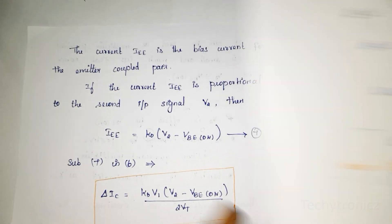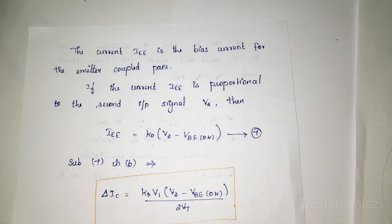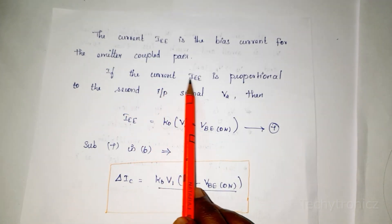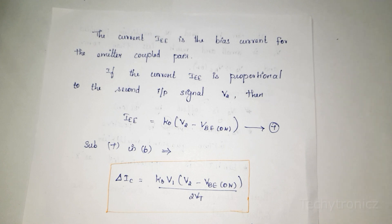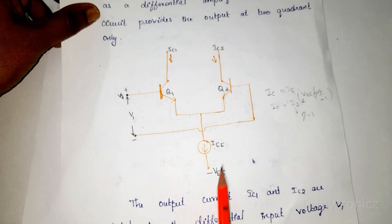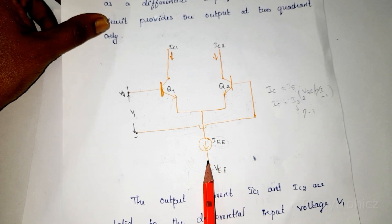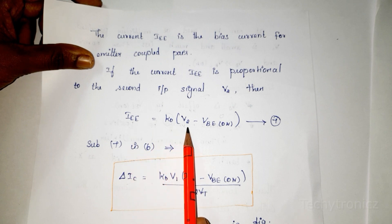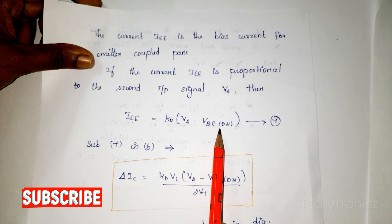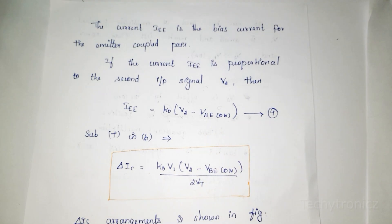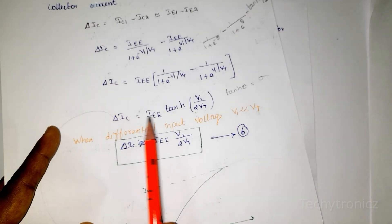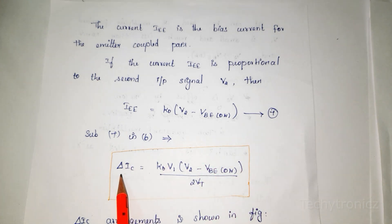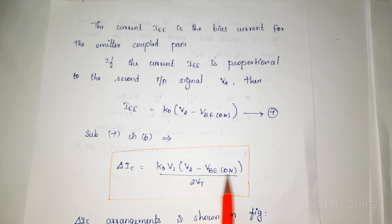The current IEE is the bias current for the emitter coupled pair. If IEE is made proportional to the second input voltage V2, then IEE = K0 × (V2 − VBE(ON)). Substituting this into the ΔIC equation gives ΔIC = K0 × V1 × (V2 − VBE(ON)) / 2VT. The output current is thus directly proportional to the product of the two input voltages.